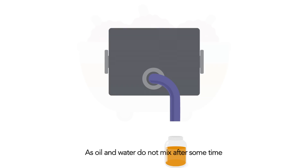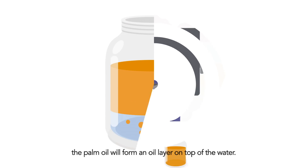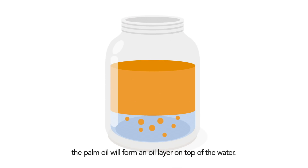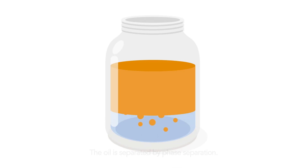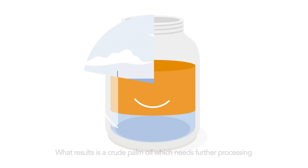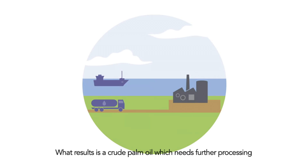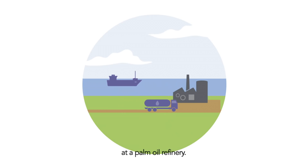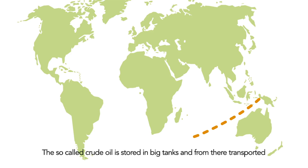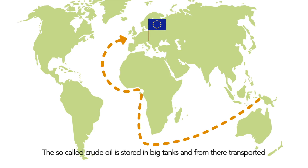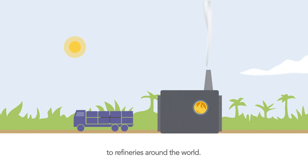As oil and water do not mix, after some time the palm oil will form an oil layer on top of the water. The oil is separated by phase separation, resulting in a crude palm oil which needs further processing at a palm oil refinery. This crude oil is stored in big tanks and transported to refineries around the world.